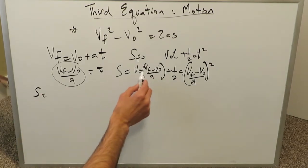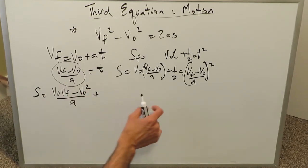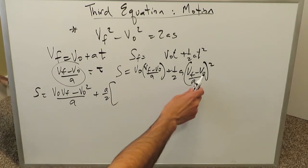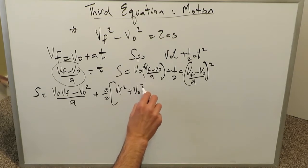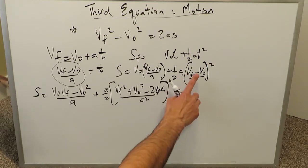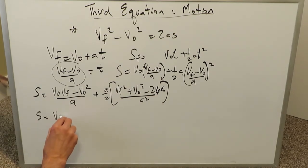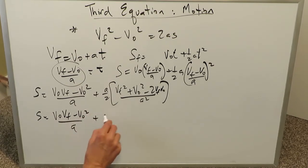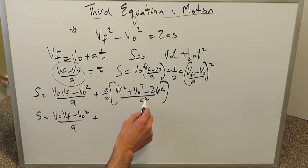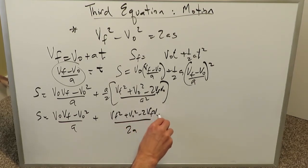Opening the parentheses, the first term gives vo·vf minus vo squared over a. For the second term, we have a over 2 multiplied by (vf squared plus vo squared minus 2·vf·vo) over a squared — using the identity (a minus b) squared equals a squared minus 2ab plus b squared.